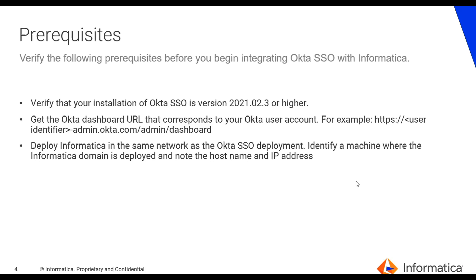Before we start configuring Okta SSO, there are three prerequisites to verify before we start the integration with Informatica. The Okta SSO version should be 2021.02.3 or higher. We should have the Okta Admin Dashboard URL ready, as all configuration will be done there. Informatica should be deployed in the same network as the Okta SSO deployment, and we should have all Informatica details such as domain, host machine, IP, Catalog URL, Administrator URL, and Catalog Admin URL.